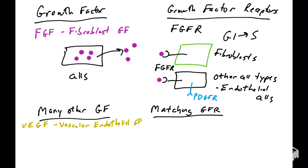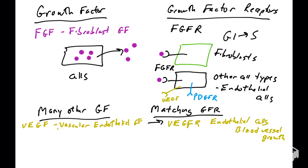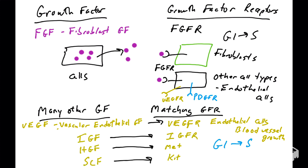There are many growth factors that bind corresponding growth factor receptors. Another example: vascular endothelial growth factor — VEGF — is a growth factor and it will target the VEGF receptor, which is found on endothelial cells. So endothelial cells can have many different types of growth factor receptors on their surface and can respond to many different types of growth factors. VEGF plays a very important role in blood vessel growth, known as angiogenesis — VEGF binds VEGFR and can get endothelial cells to go through the cell cycle and help trigger blood vessel growth.